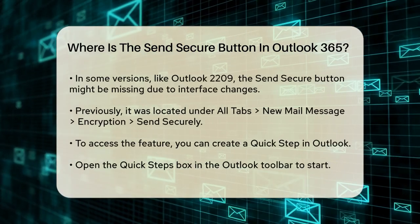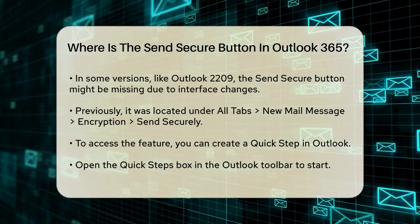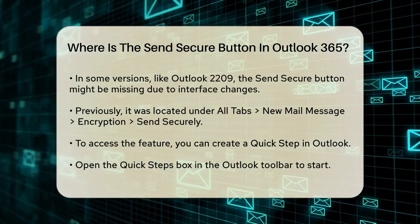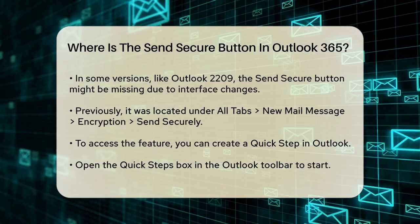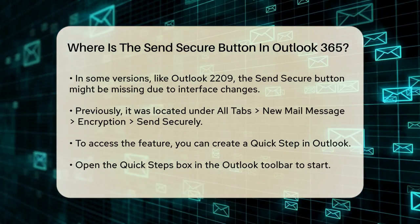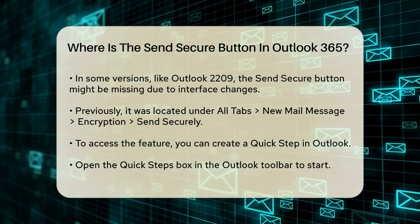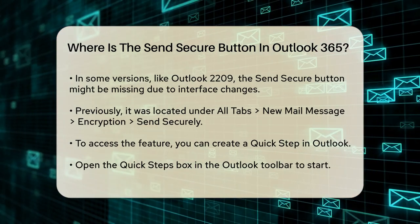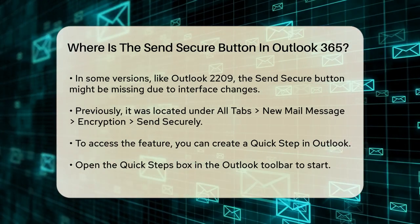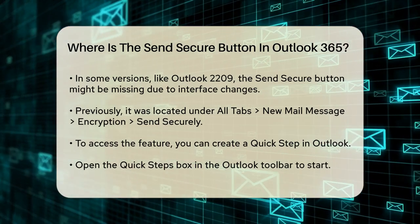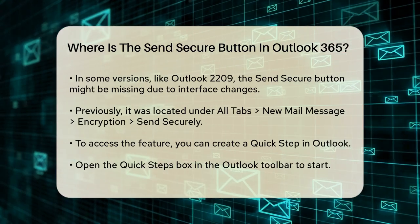In some versions of Outlook, the Send Secure button might be missing due to changes in the interface or settings. For instance, in the newer version of Outlook 2209, some users have reported that the Send Securely option is no longer visible in its usual place under the Customize ribbon options. It used to be under all tabs — New Mail Message, Encryption, Send Securely — but it seems to have been moved or removed.